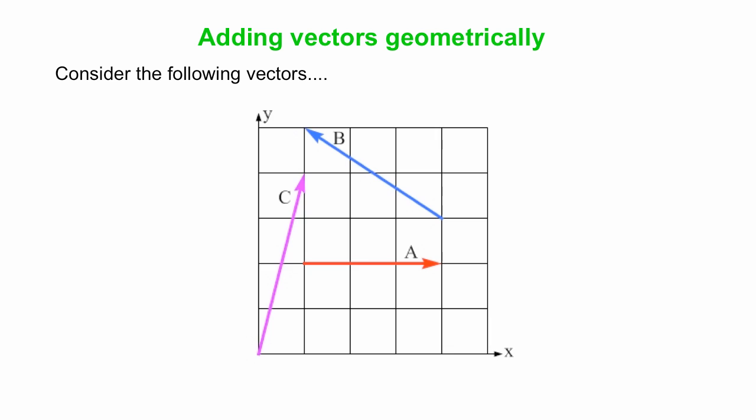Okay, so let's consider the following vectors. We have three vectors here, but let's say we want to take two of them and add them together. How do we find the sum of the vectors A and B?